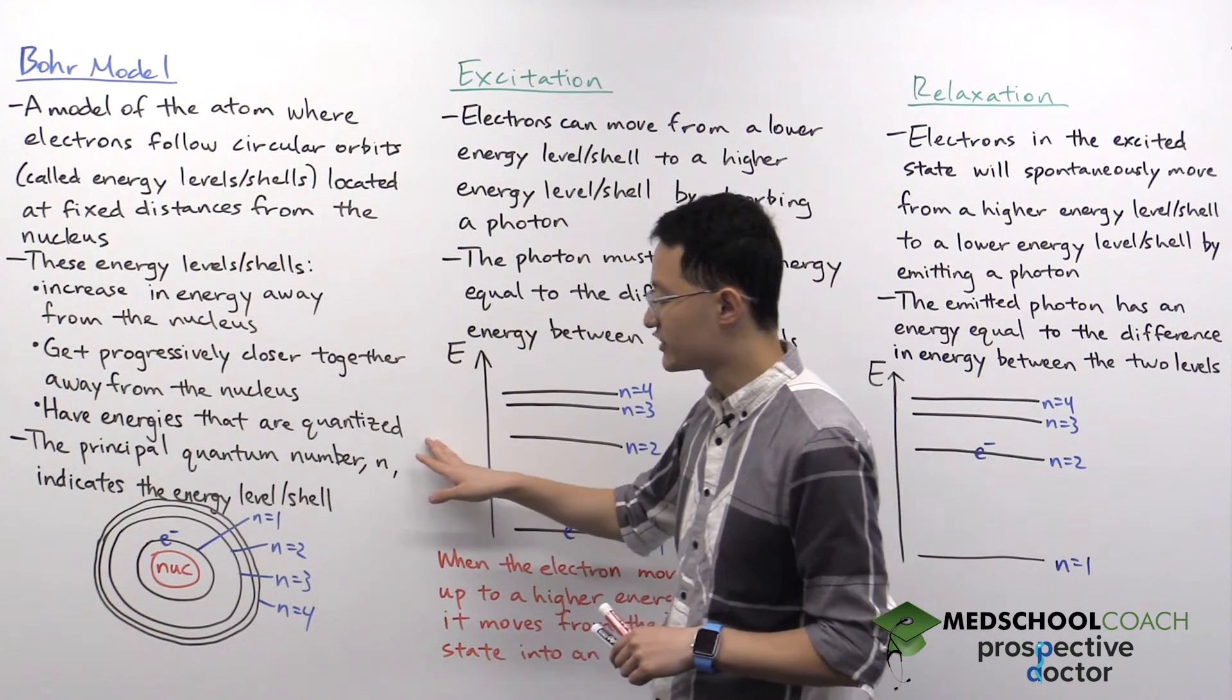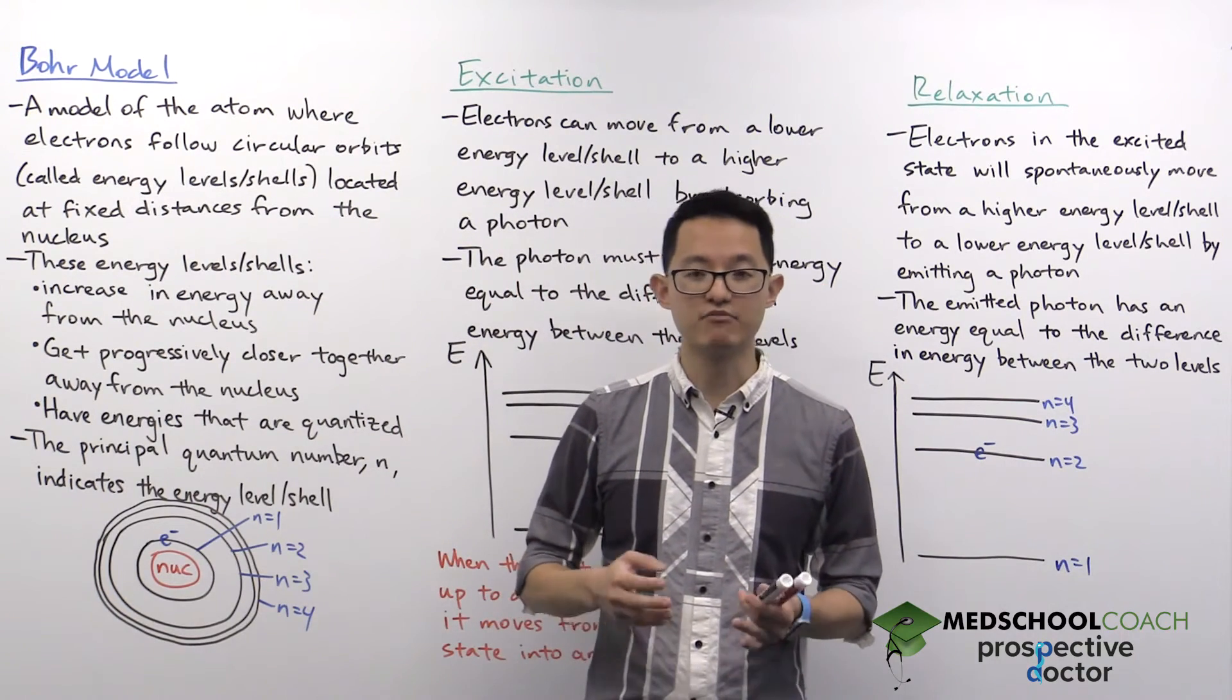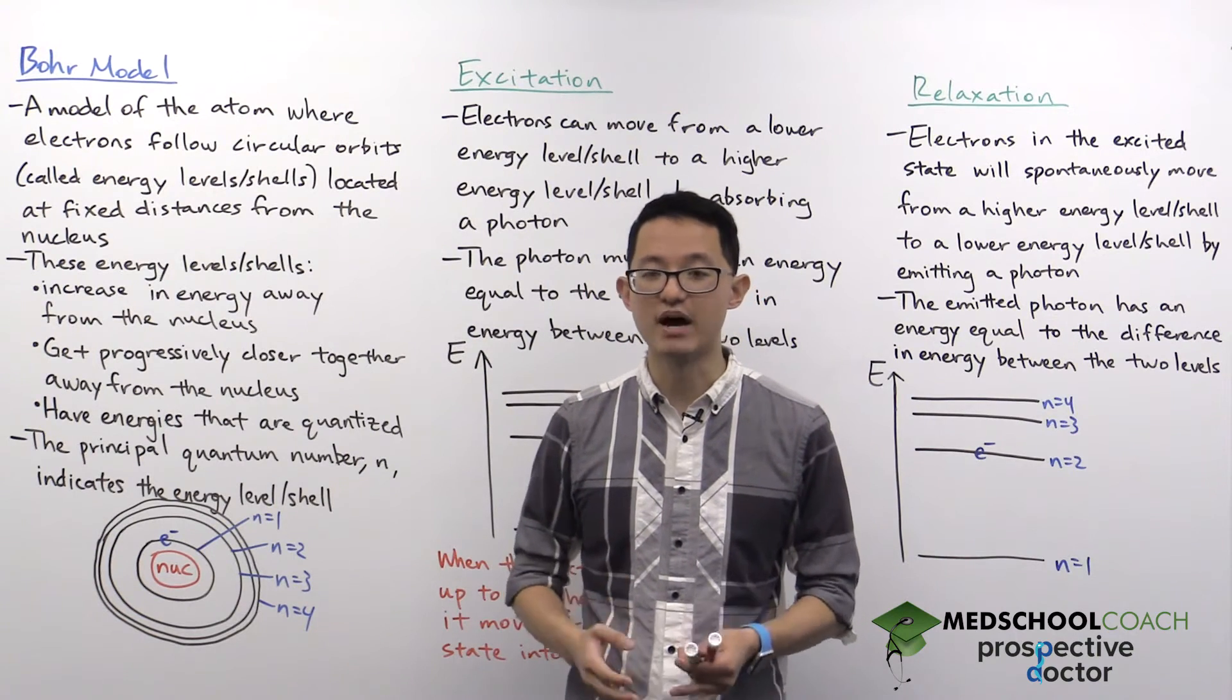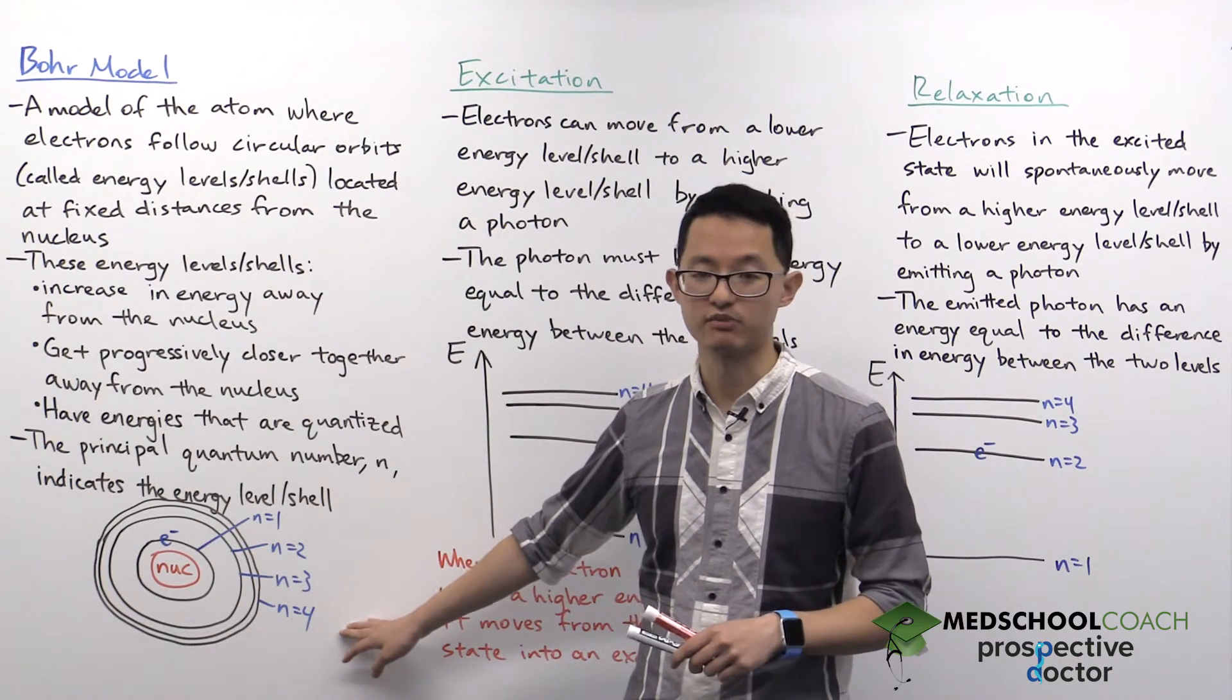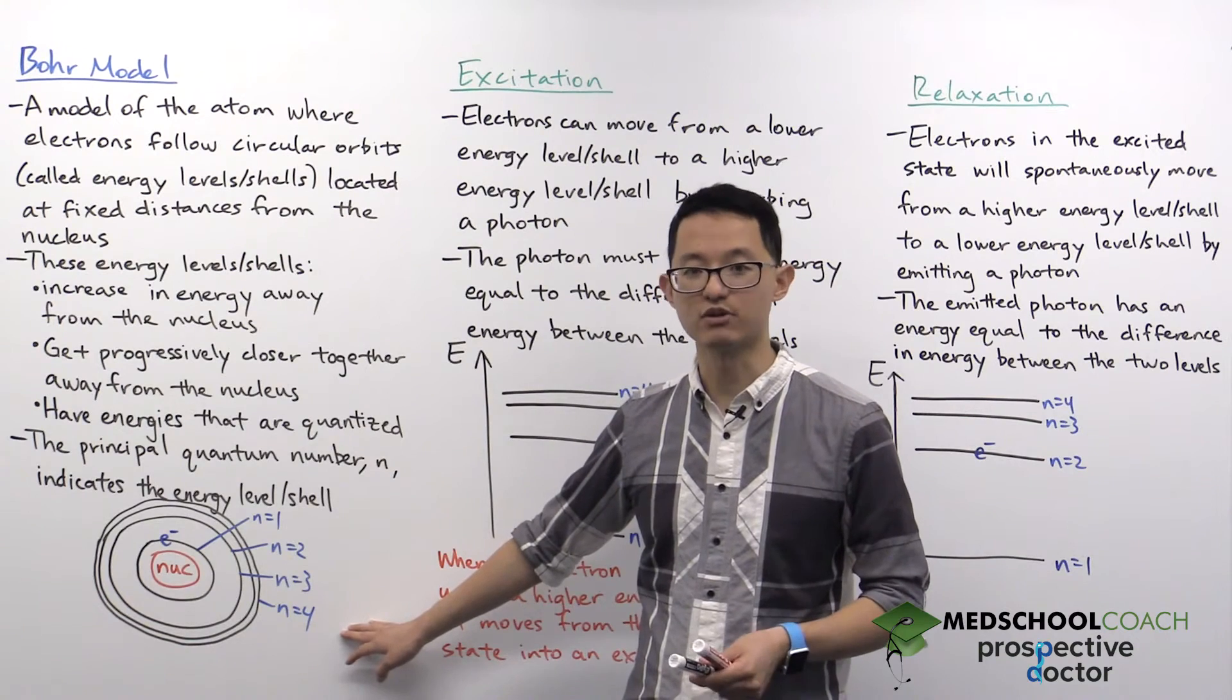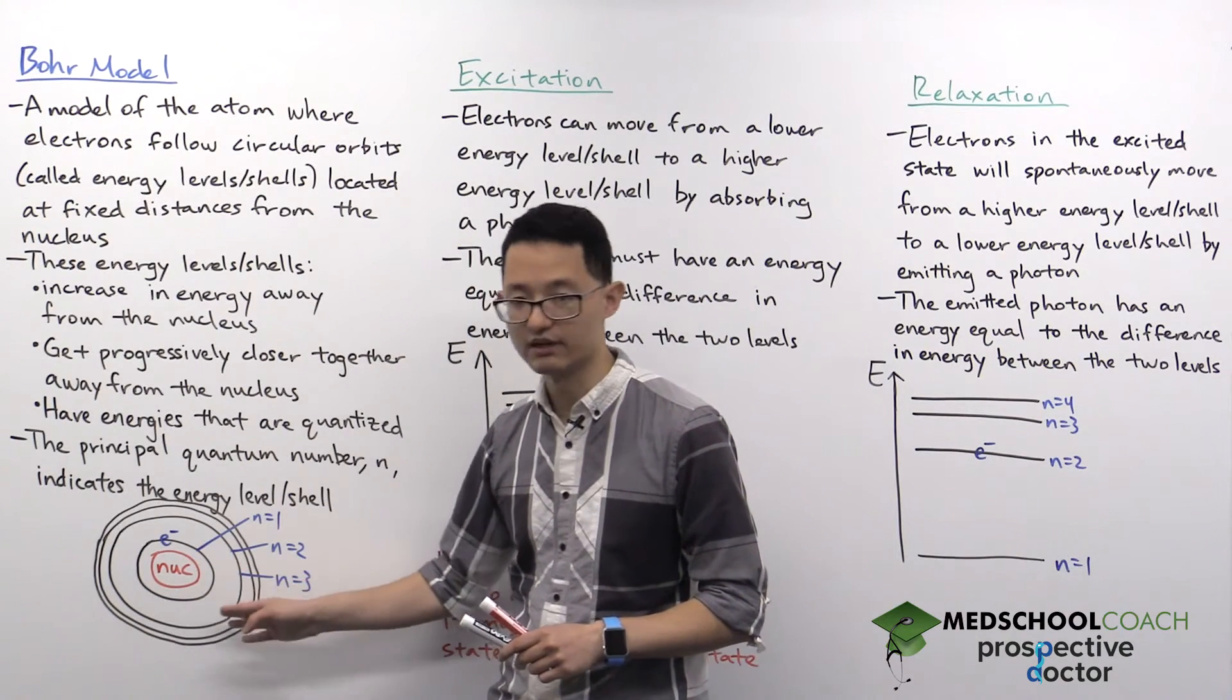Finally, these energy levels or shells have energies that are quantized, which means in order for an electron to reside in one of these energy levels or shells, they have to have a precise amount of energy, hence quantized. And at the same time, it's not possible for electrons to reside anywhere on the atom except on one of these orbits. That means the electrons can't be residing anywhere between the orbits. They have to be on one of these orbits.